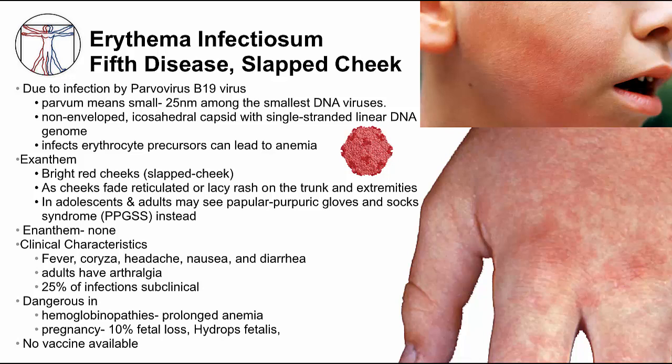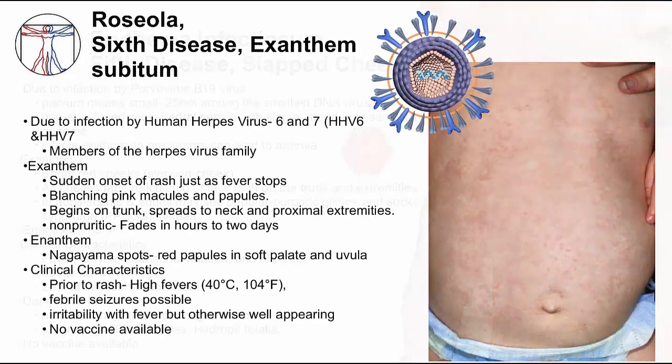Parvovirus can be severe in people with hemoglobinopathies like sickle cell disease because of prolonged anemia. Like rubella, parvovirus infection can be dangerous to the fetus, causing fetal death and hydrops fetalis, which results from severe fetal anemia. The last disease is sixth disease, also commonly called roseola, caused by herpes viruses HHV-6 and HHV-7. The exanthem has a unique pattern — it erupts suddenly after the fever resolves. The rash consists of pink macules and papules that blanch, starting on the trunk and spreading to the neck and extremities, fading within hours and definitely by two days. There is an associated enanthem called Nagayama spots — red papules on the palate and uvula. The distinguishing clinical characteristic of roseola is high fevers prior to the rash and potential febrile seizures.